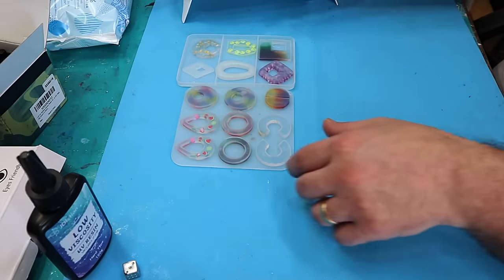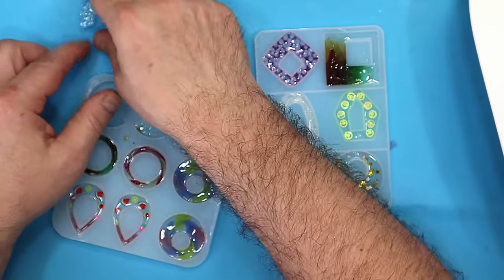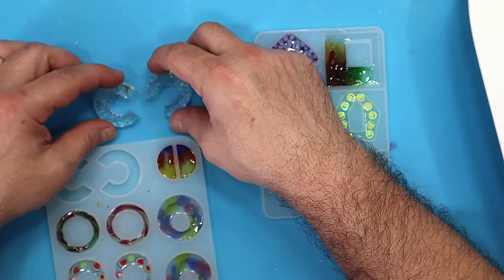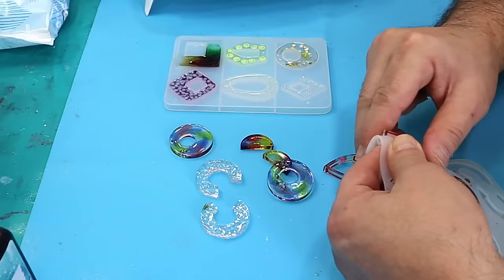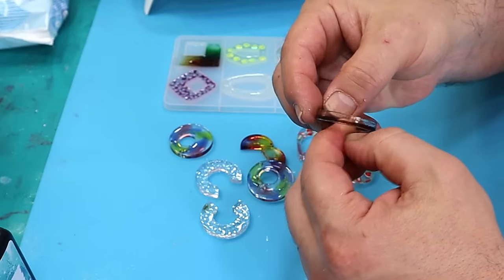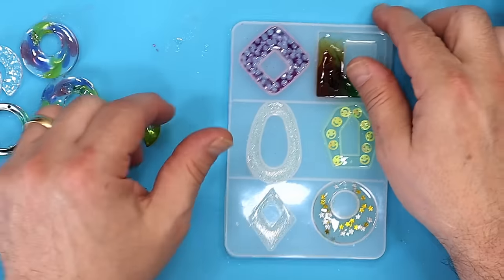It's had the 60 seconds and these should all be ready to de-mold now. Yeah they're lovely and cured. Oh that is going to make a massive difference for me to be able to bulk cure stuff. And if you dome these up as well afterwards using the high viscosity resin then you get a great finish on them. But I don't always dome all my pairs of earrings. Some I do.